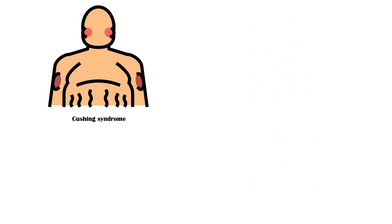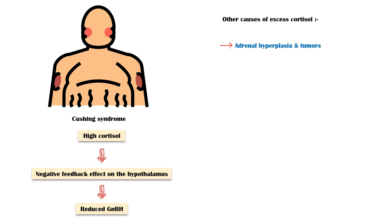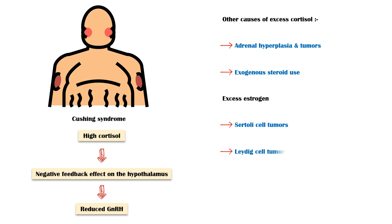In Cushing syndrome, high cortisol levels in blood will exert a negative feedback effect on the hypothalamus, which causes reduced GNRH secretion. Other causes of excess cortisol include adrenal hyperplasia and tumors, and exogenous steroid use. Excess estrogen will exert a negative feedback effect on the pituitary to reduce FSH and LH hormones, ultimately reducing testosterone levels. Conditions where there is estrogen excess include Sertoli cell tumors, Leydig cell tumors, liver failure, and severe obesity.